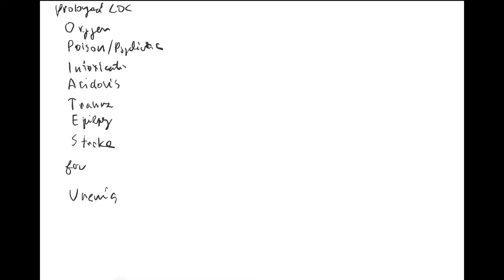Now let's get to brain death. Brain death is defined by the death of the brain stem — that's important. This is why you are always testing the brain stem in these patients. It is a very serious protocol where the patient must be free of opiates and any drugs. You test the function of the brain stem by its reflexes. If the patient responds to you, there's no need to test the brain stem.